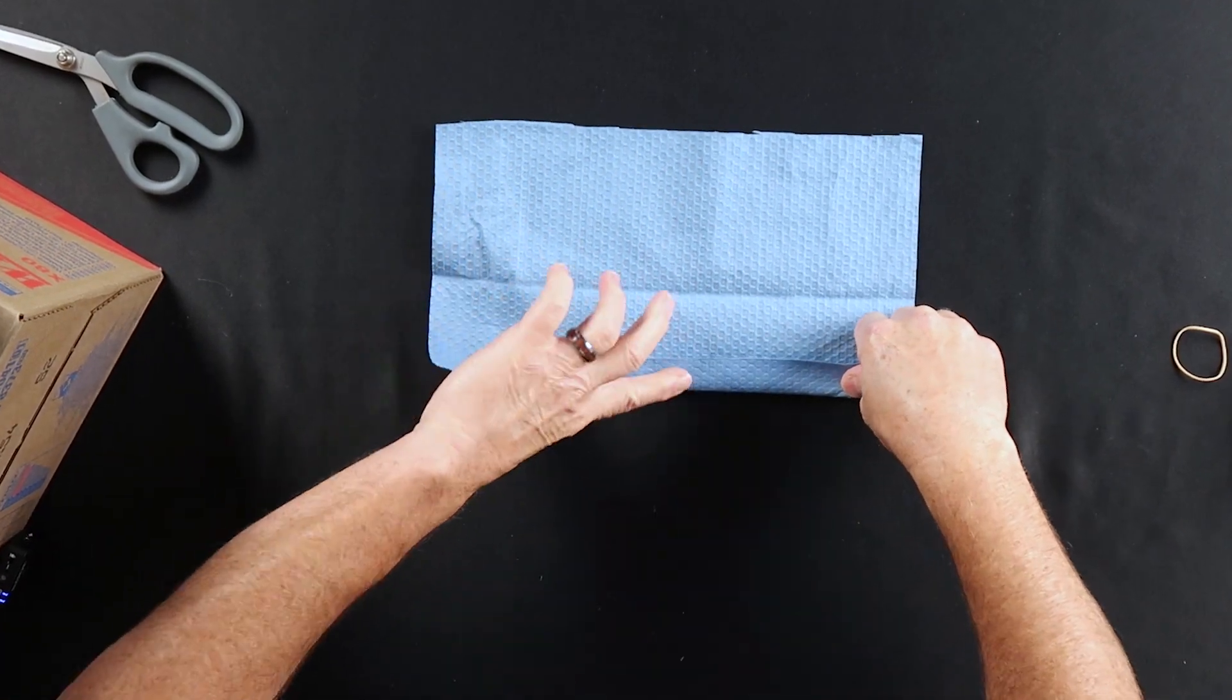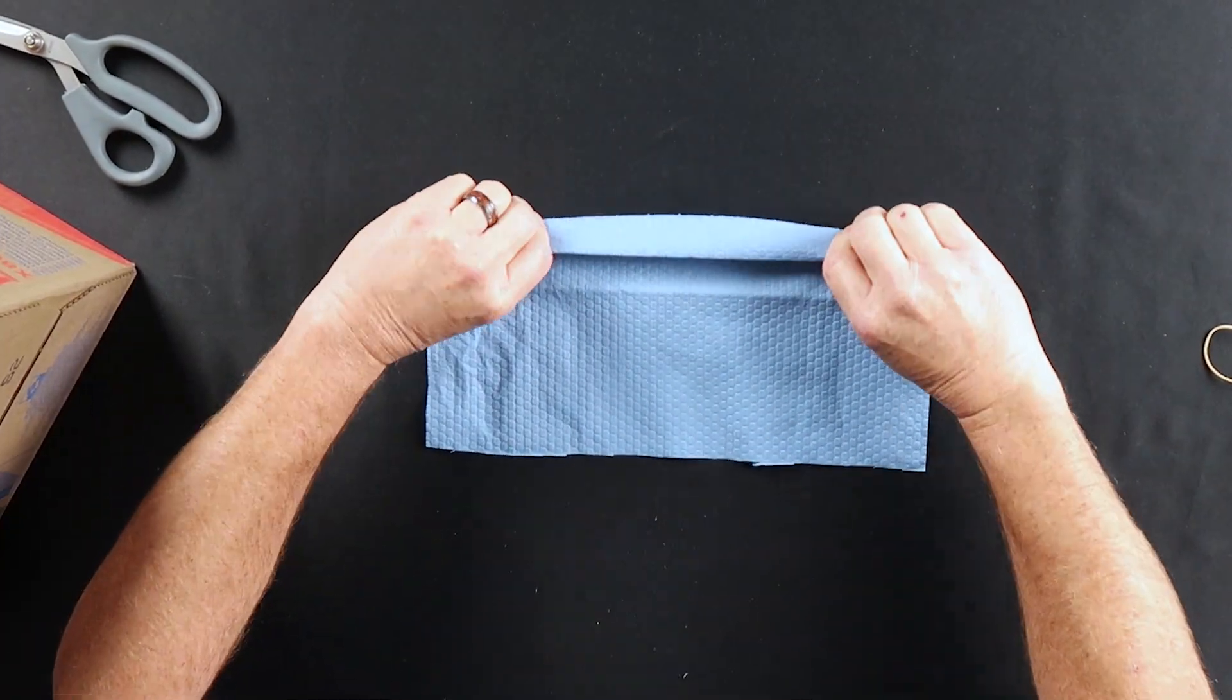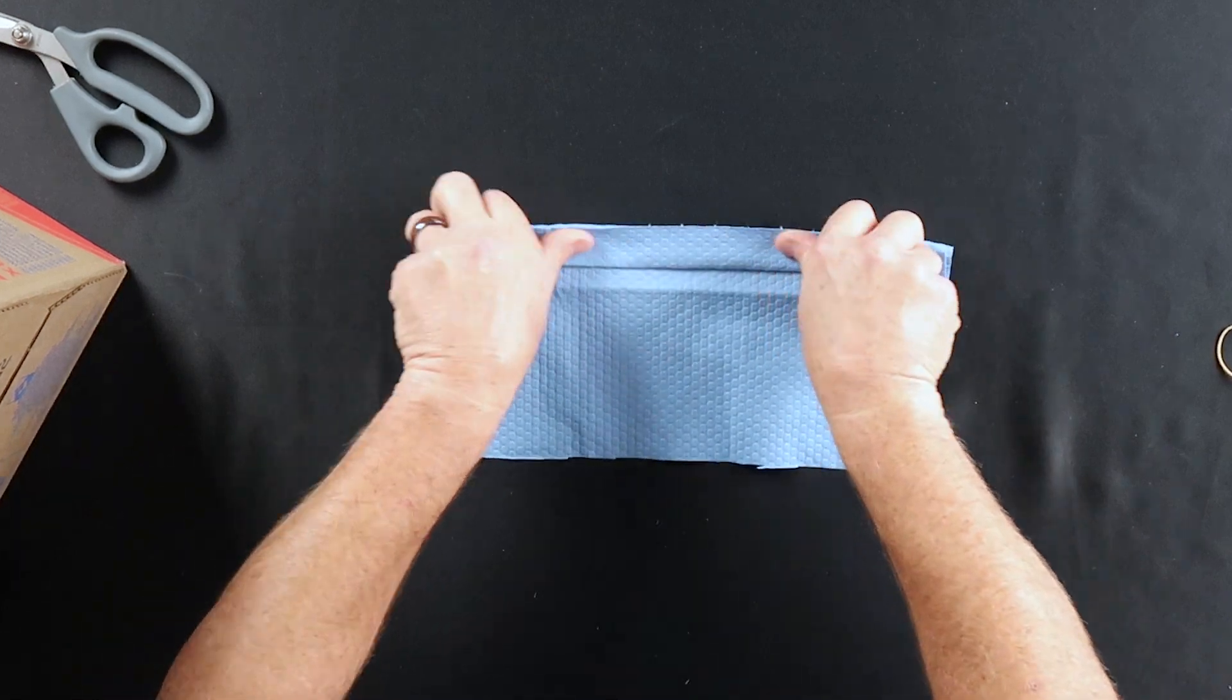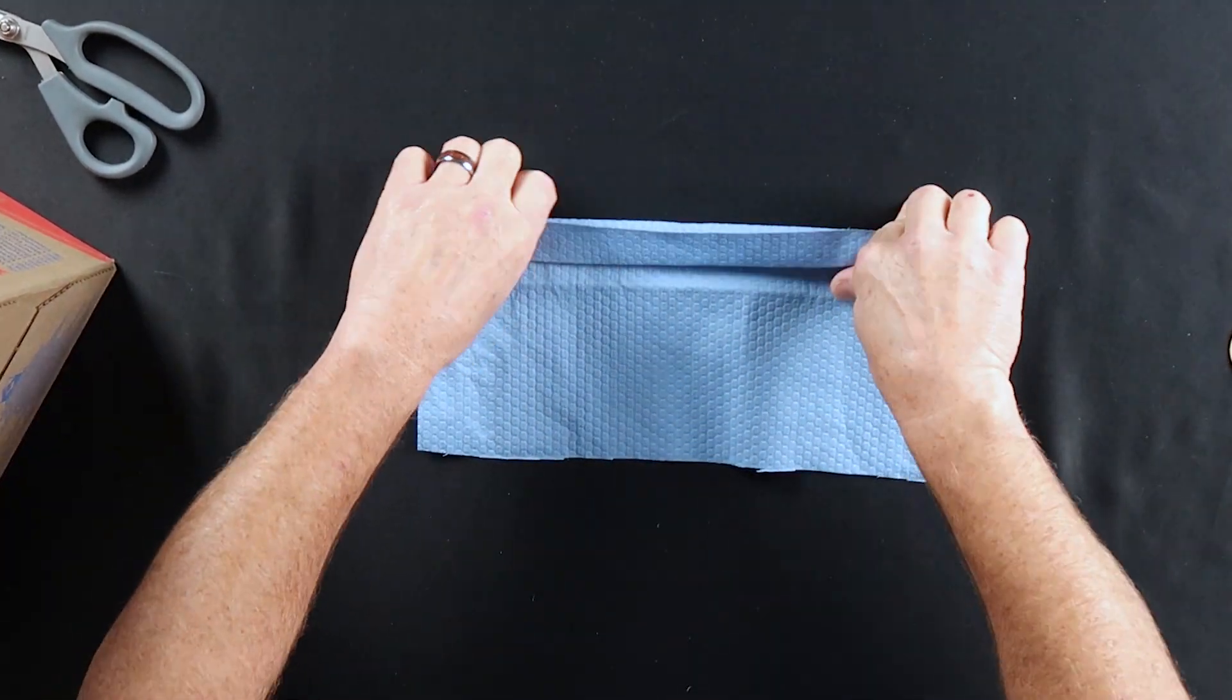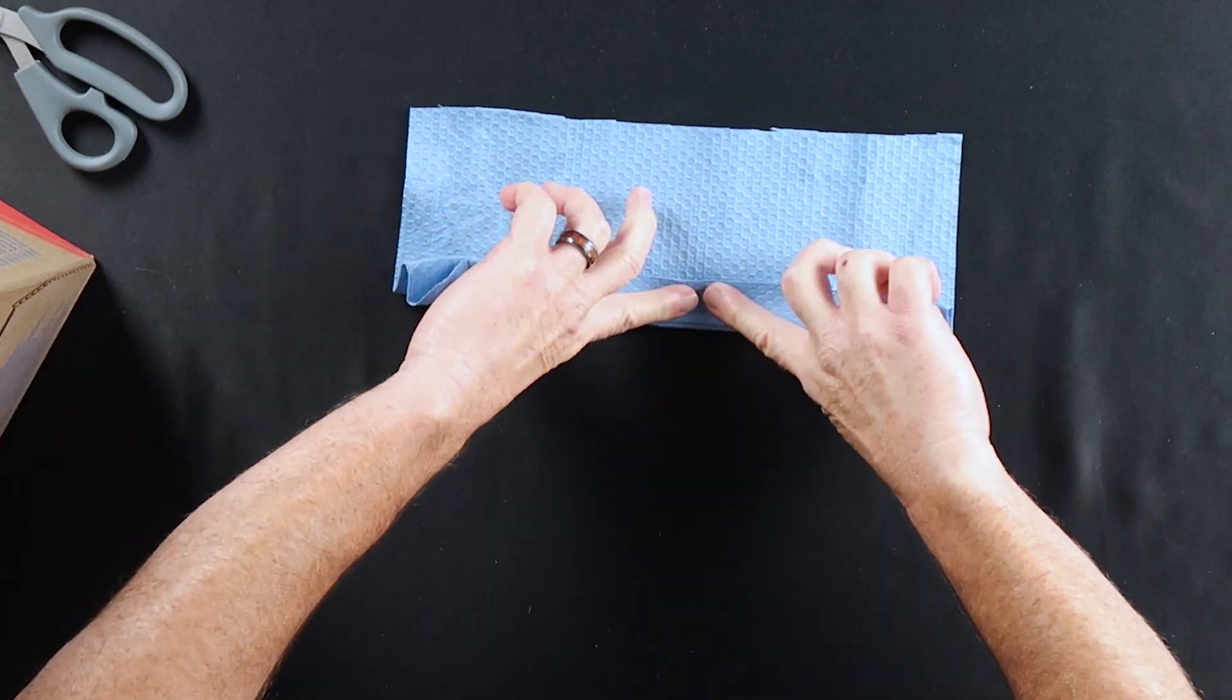From there, give like a three quarters of an inch to an inch fold, flip it over, do it again, press in between the folds, do it again.